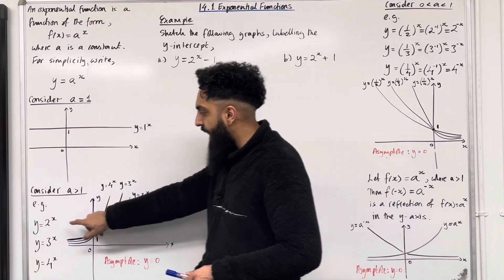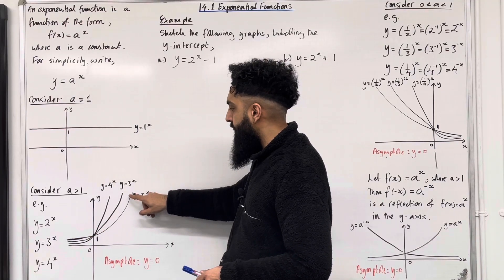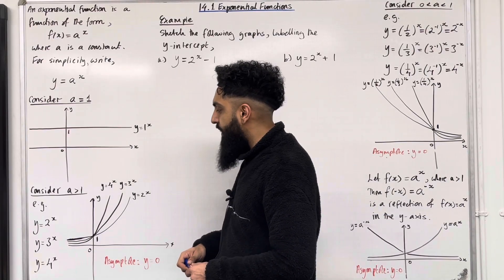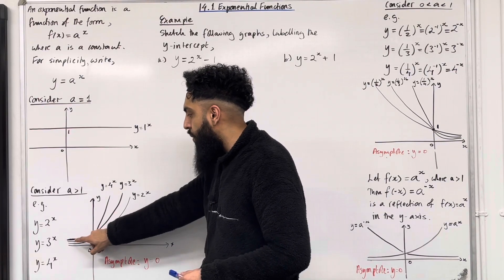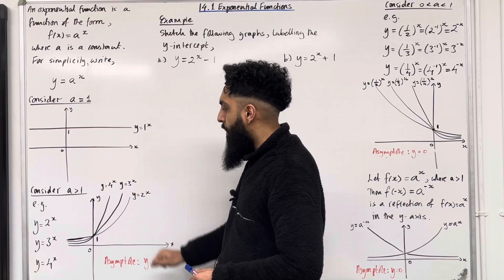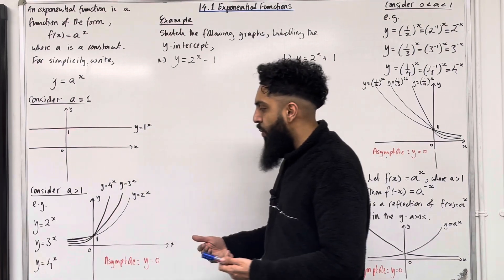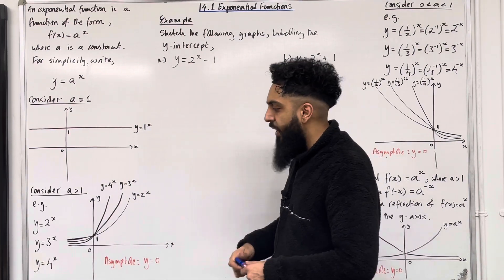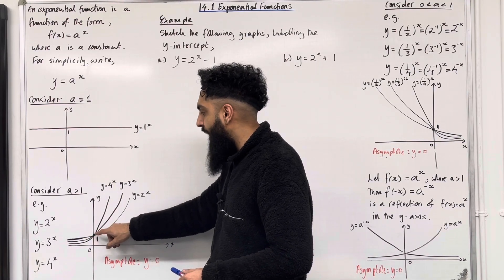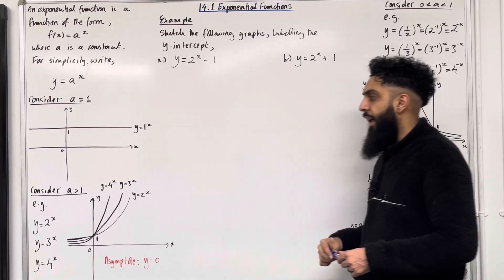Starting off with y = 2^x. Here is the graph of y = 2^x. Now looking at y = 3^x — notice that 3^x starts below y = 2^x, and then after the y-intercept it becomes steeper. Moving on to y = 4^x: it starts below y = 3^x, and then after the y-intercept it becomes steeper than y = 3^x.